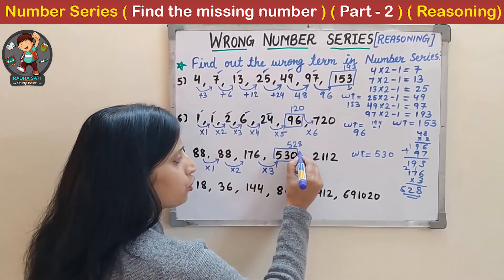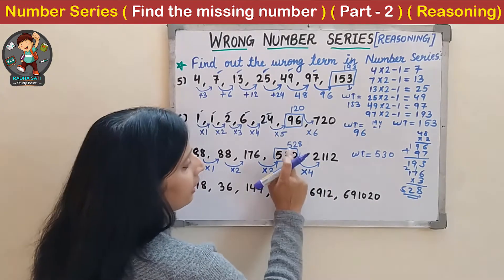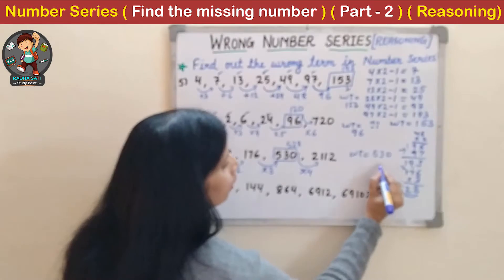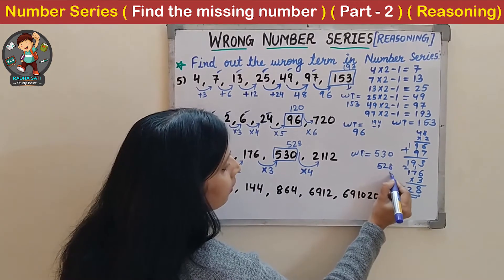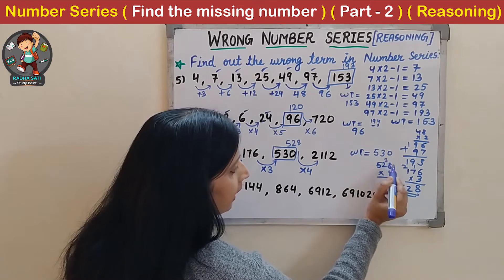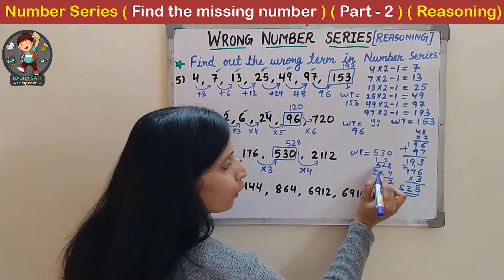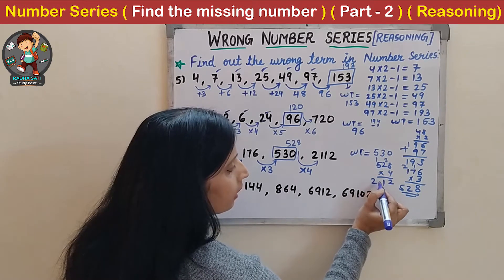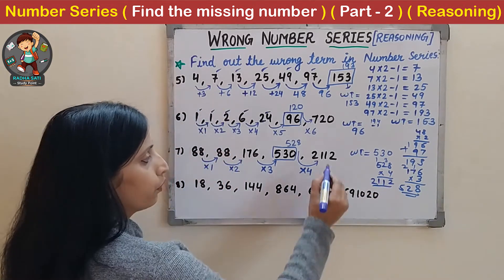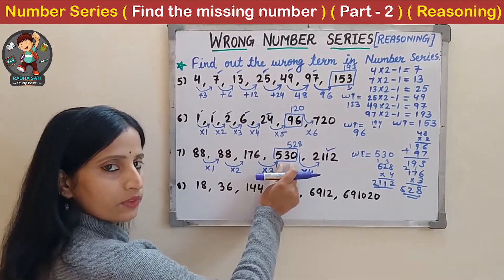Next should be 4. Let us check: if we multiply 528 by 4 we get 2,112. So our answer is correct - 530 is the wrong term here.